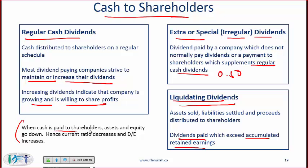When cash is paid to shareholders in the form of any of these dividends, assets and equity go down. Liabilities or debt do not go down, so various leverage ratios such as debt-to-equity and debt-to-assets will go up. It is safe to say that almost all your ratios will become worse when you pay dividends.